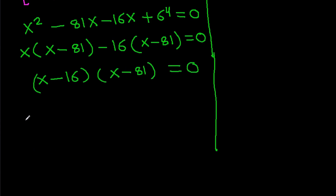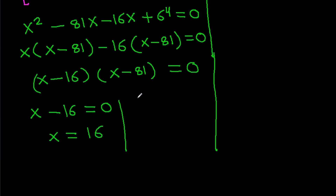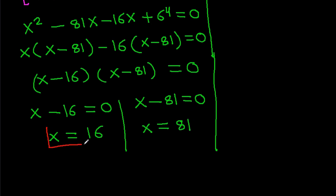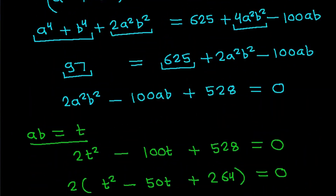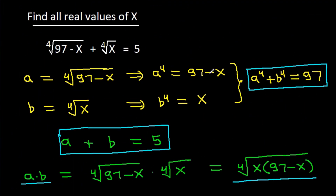Factoring: x(x minus 81) minus 16(x minus 81) equals 0, so (x minus 16)(x minus 81) equals 0. Therefore x equals 16 or x equals 81. These are the real values of x.